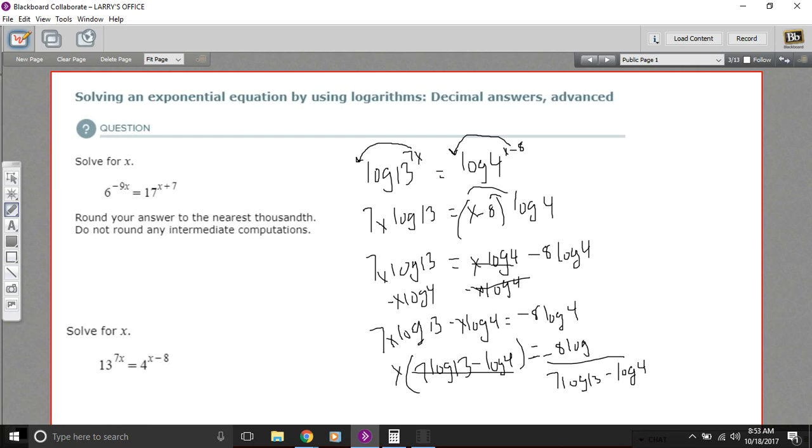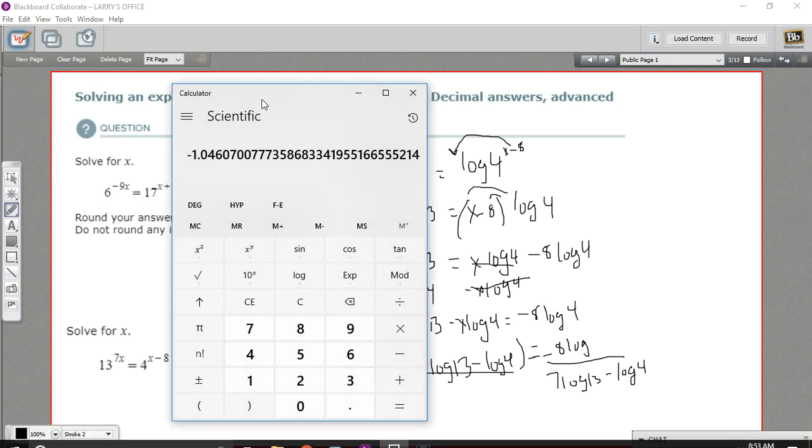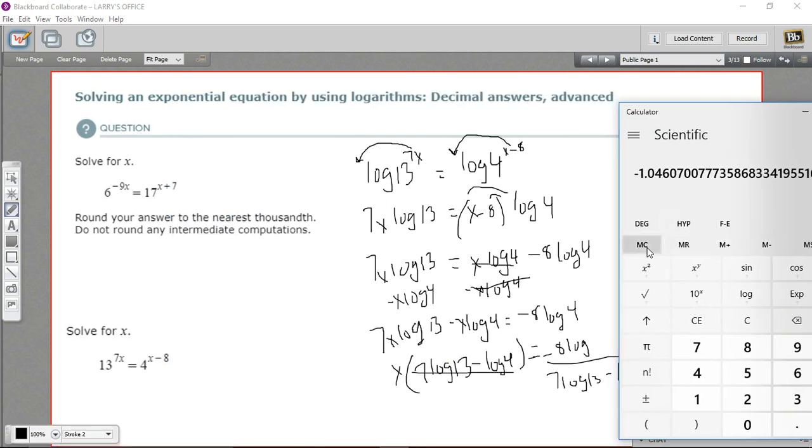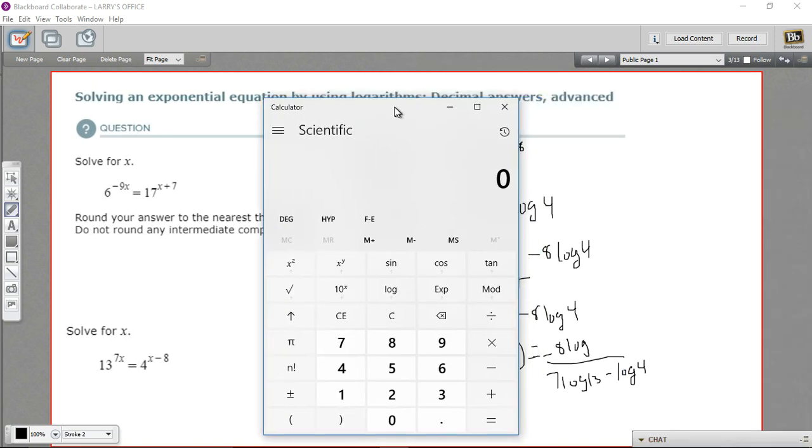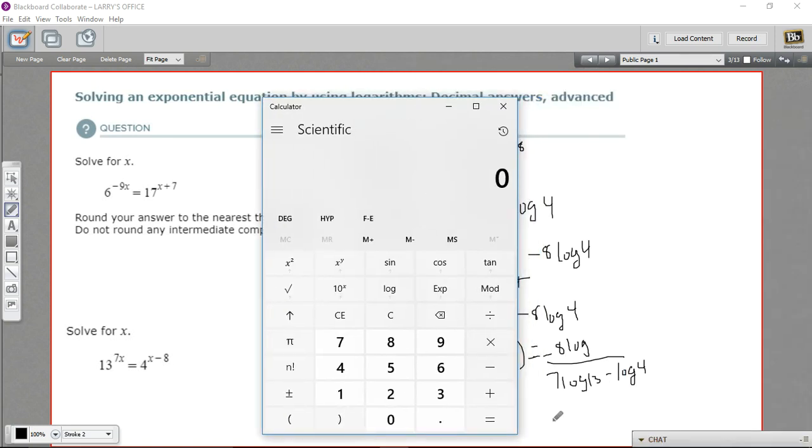Let's see if we can calculate a value for this one. We'll bring up the calculator again. I'll make sure to clear out my memory. And let's start by calculating what's on the bottom here. So we've got 7 log 13 minus log 4. So I'm going to type in 13, take the log, multiply it by 7. I think we can do this all without resorting to memory for this step. So I'm going to minus and then put 4 log and equals. So that's our bottom. Let's store that into memory.